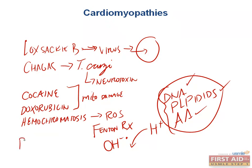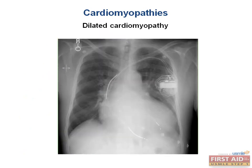Dilated cardiomyopathy in pregnancy is particularly high yield because it's somewhat unique — it doesn't fit neatly into chemical-induced, infectious, or idiopathic categories. It is due to a significant increase in plasma volume during pregnancy, since you need enough blood for two people. This can volume overload the heart, stretching the heart chambers to the point of significant myocyte damage. All of these causes — chemical, viral, pregnancy, idiopathic — lead to a balloon-like dilatation of the heart visible on chest X-ray.